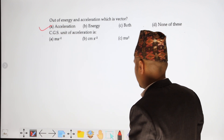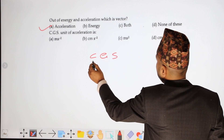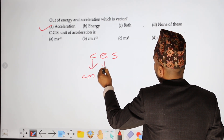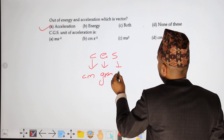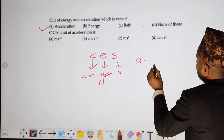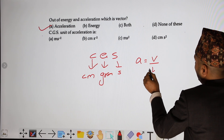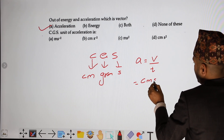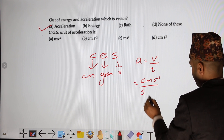CGS unit of acceleration: in the CGS system — centimeter, gram, second — acceleration is change in velocity divided by time. Velocity unit in CGS is centimeter per second, and the time unit is second, so acceleration in CGS is centimeter per second squared.